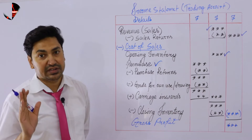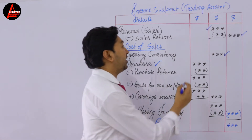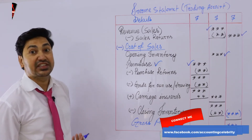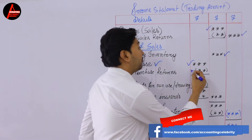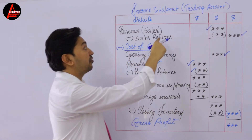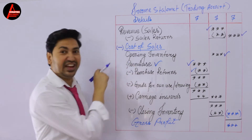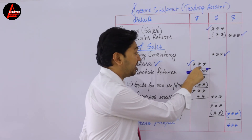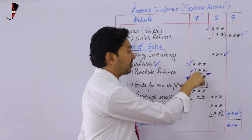After that you have to write the purchase — this is a common item in the trial balance, it will always be given. Take the purchase item and write it in the first column. After that you will have purchase return in the trial balance — take this purchase return and write it below purchase. The same way you subtracted sales return from sales revenue, you subtract purchase return from purchase.